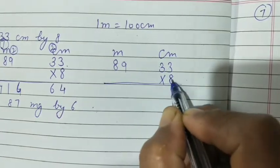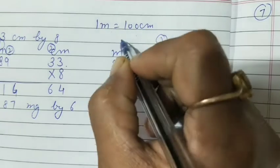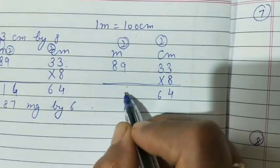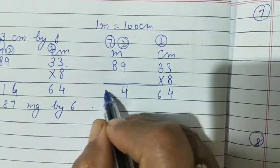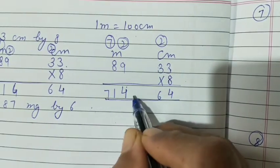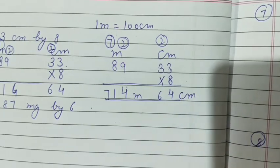You know how to multiply. 8 times 3 is 24, 2 carry over. 26, 2 carry over. 8, 9 is 72 plus 2 is 74, 7 carry over. 8 times 8 is 64 plus 7, 71. So answer is 714 meter 64 centimeter.